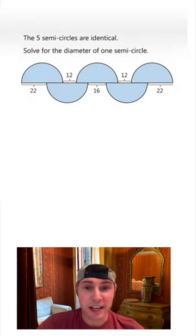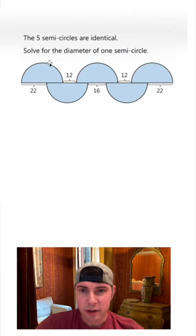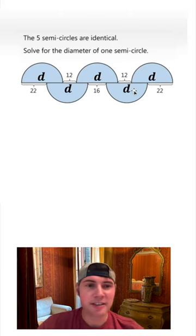This says the five semicircles are identical, so we know they all have the same radius and diameter. It says solve for the diameter, so I'm going to label each of these diameters as d.